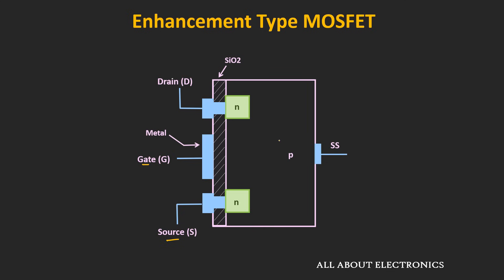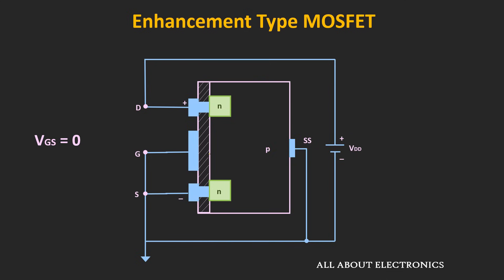Now let's see the working of this N-channel enhancement type of MOSFET and understand how the channel is formed when we apply the control voltage. Initially, if Vgs is kept at zero and voltage is applied between the drain and source terminal, then due to the absence of the channel there will not be any flow of current through this MOSFET.